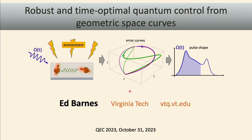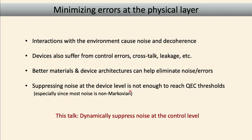If you're not familiar with what a space curve is, don't worry, I'll explain that. This is about minimizing errors at the physical layer. We have interactions with the environment that can cause noise and decoherence, control errors, crosstalk, and all kinds of other effects that lead to imperfect algorithms and operations.